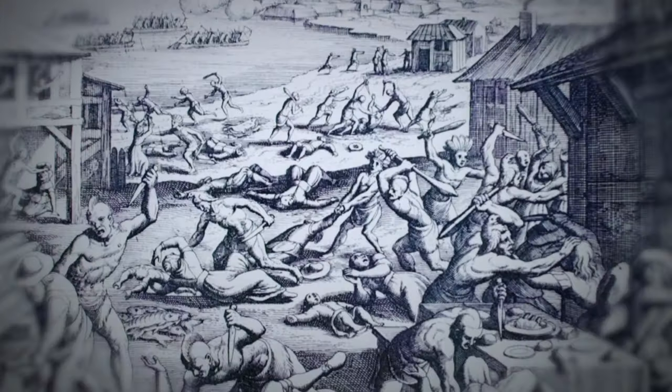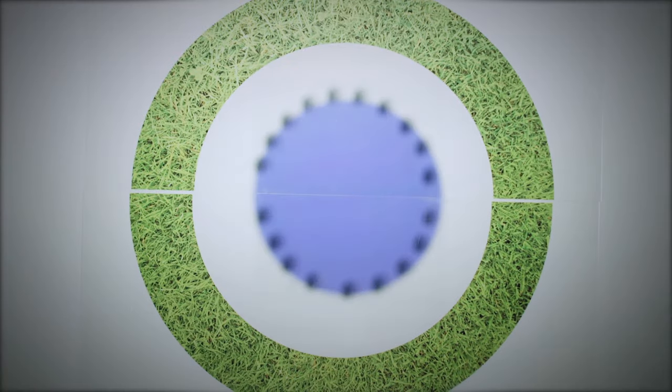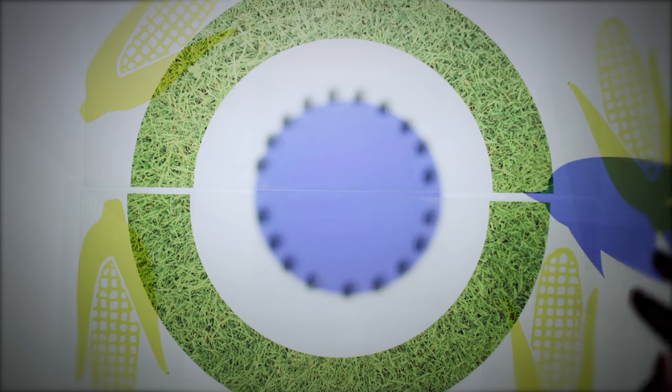So settlers started to take food away from the Powhatans by force, leading the Powhatans to retaliate, laying siege to Jamestown. Confined to their fort, settlers no longer had access to the same food they used to.